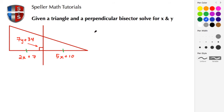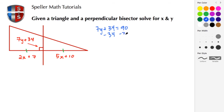We also know that a perpendicular creates a 90-degree angle. So what we're going to do first is solve for Y. We're going to take the expression given, which is 7Y plus 34, and set that equal to 90, because it creates a perpendicular angle which we know is 90 degrees. Then we're going to use basic algebra — we're going to subtract 34 from both sides.